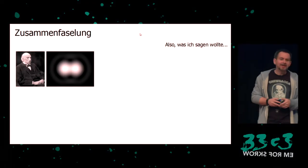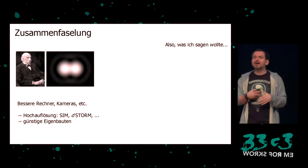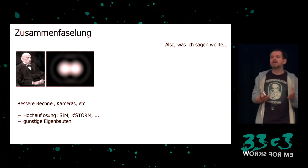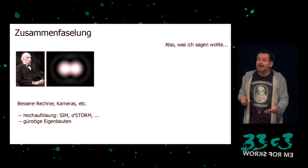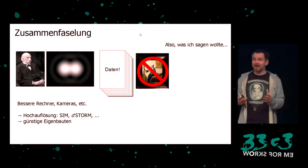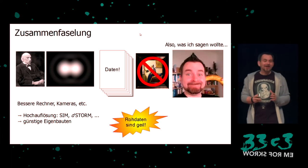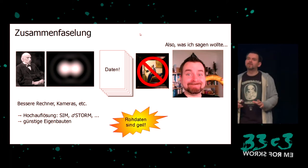Here's the conclusion. I talked about the diffraction barrier and how it causes problems. I talked about better computers, better software culture, modern cameras, and overall better technology — so we can have super-resolution such as SIM and D-STORM, and we can make cheap DIY things. But it's mostly about data — microscopy is data collection, not necessarily making pictures. Raw data are great. We scientists are a bit slow, but many have opened their software, published open access, and published data online. It has to be more — so be patient with us. But there will be more and more open science and everyone can play.